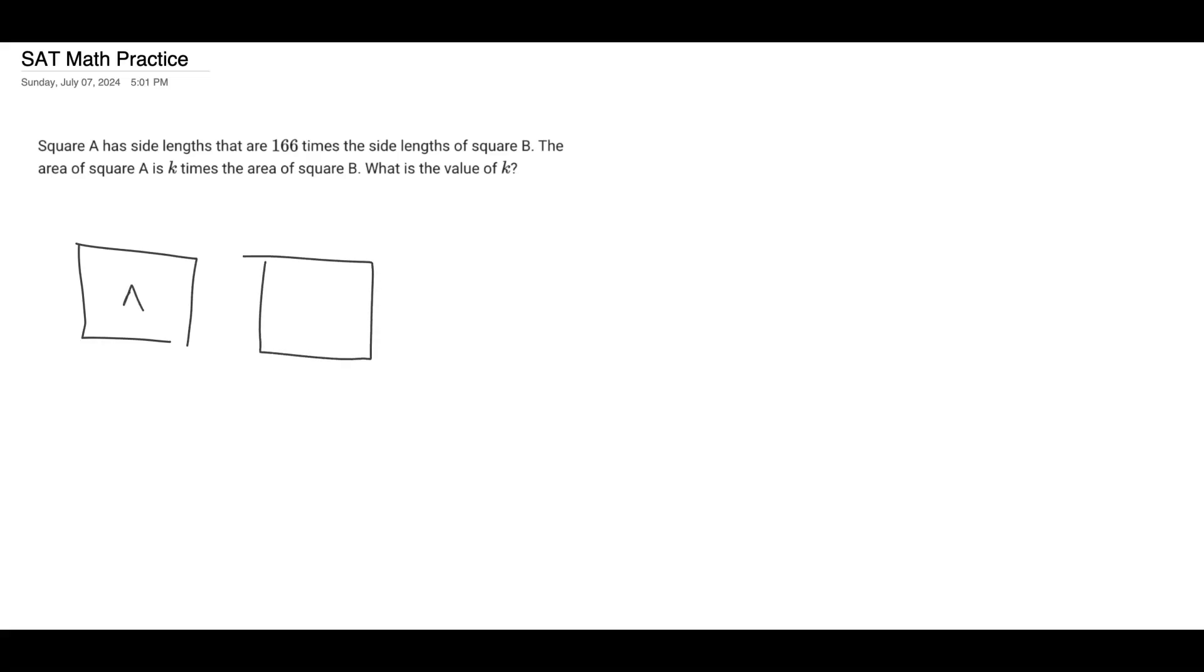So let's call this one square A and this one square B. And we know the side lengths are 166 times the side lengths of B. So the side lengths of B are x, call it x. Then A would be 166x. I'll just put those on both sides.